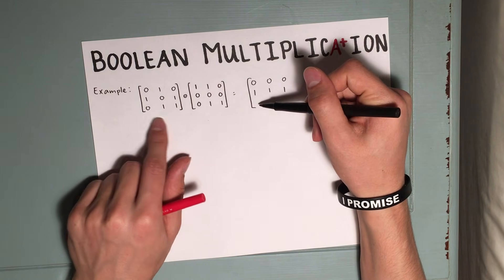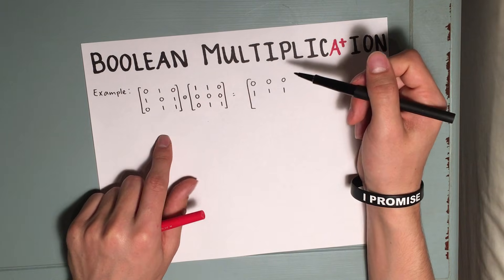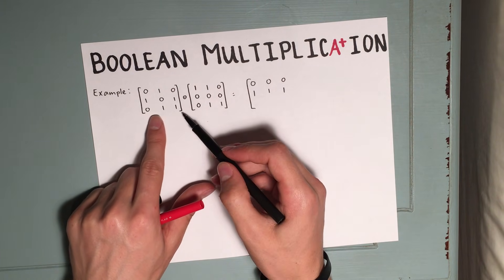Try to do the final row by yourself. You should pause the video if you're going to do that. So we have zero, one, one as the third row here.